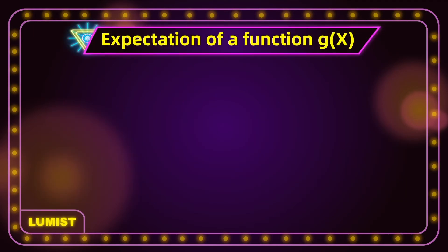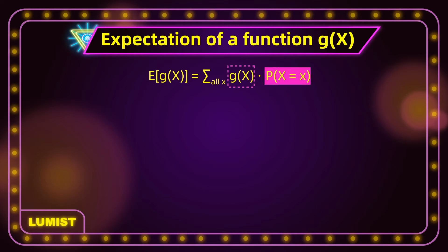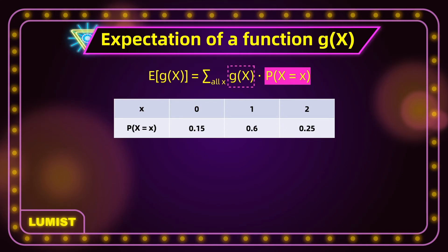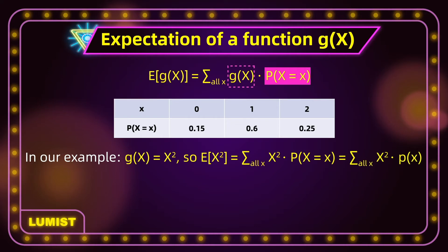Now, how do we find the expectation of g(x)? The expected value of g(x) is equal to the sum of g(x) for all x values, multiplied by their corresponding probabilities. Since g(x) = x², the expectation of x² is the sum of x² for all x in our distribution, multiplied by their corresponding probabilities.